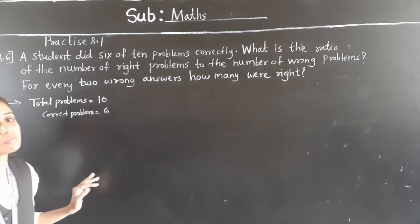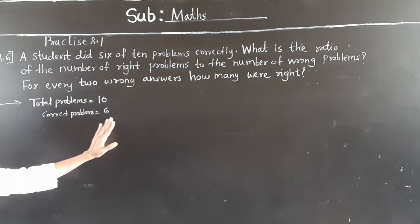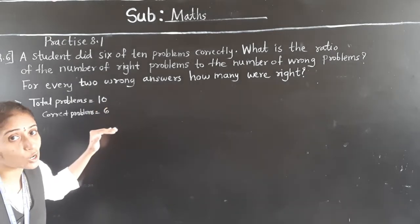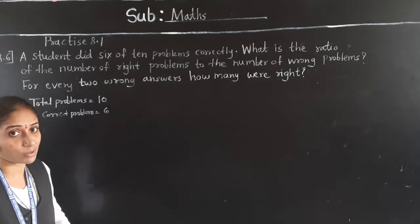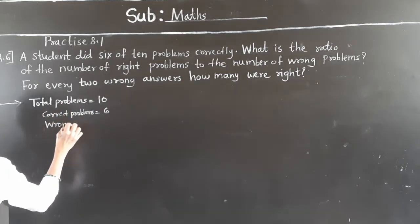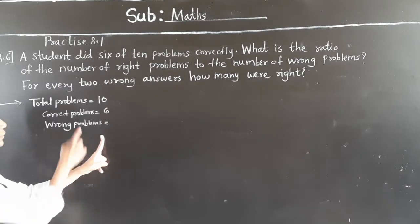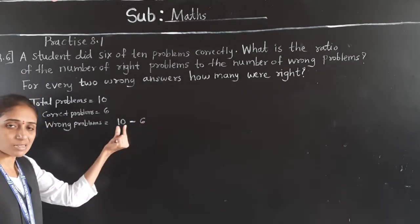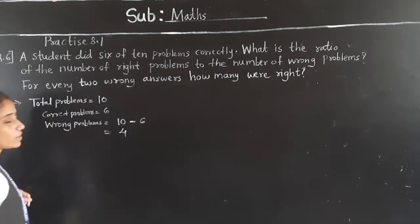Wrong problems — how to find them? From total problems we subtract the correct problems. Total problems are 10, and 6 problems are correct. So wrong problems are 4.